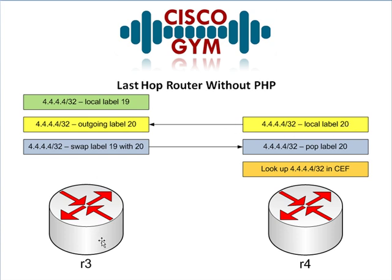R4 tells Router 3, and Router 3 has already learned this prefix via IGP — EIGRP, OSPF, whatever you're running — and it's already gone ahead and said hey, I see this prefix in my routing table. Let me go ahead and give it a local label — I'm going to give it local label 19. And it will actually advertise that out to its upstream neighbor or neighbors, in this case R2. R4 knows about this prefix and has told R3 that its local label is 20. So when R3 builds its LFIB, it says if I receive a packet labeled with label 19, what I need to do is swap label 19 with label 20 and send it out to R4 via Serial 0/0, or whatever interface this is.